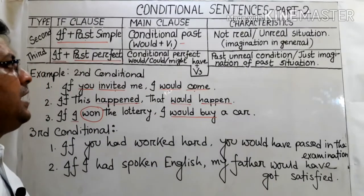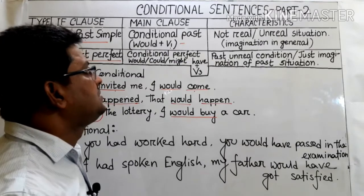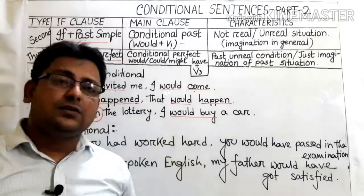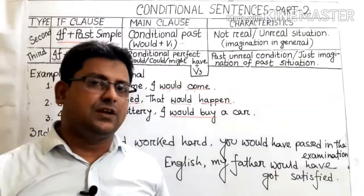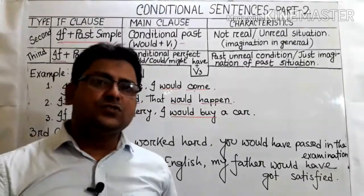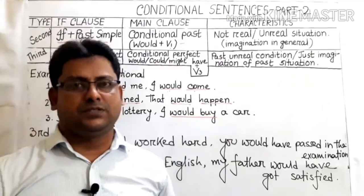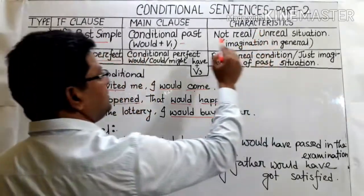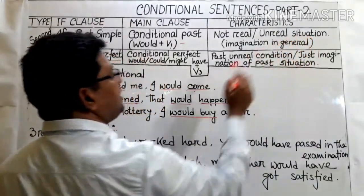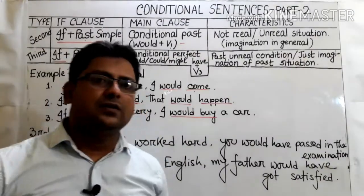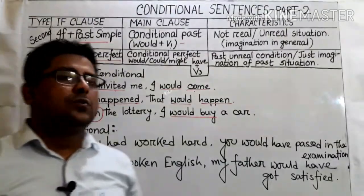The main characteristic of this conditional sentence is that it is actually an unreal conditional — this is not real. This type of conditional sentence shows the normal imagination of the past. The sentence expresses an unreal situation and is the normal imagination of the past.